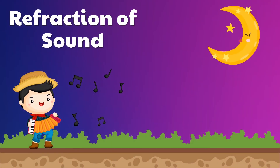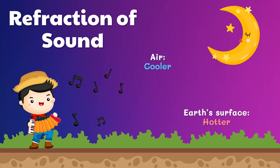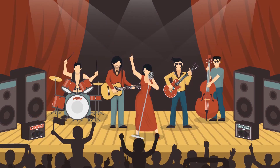At night time, the air near the Earth's surface is warmed by the heat emitted from the ground, making it hotter than the air above due to the absence of the sun. This makes sound move from the cooler air above towards the hotter air near the Earth's surface. Thus, sound waves are refracted to the Earth's surface. This makes open field concerts better done during night time, as sound waves are refracted from the stage towards the audience, giving the crowd clearer and more audible music to enjoy.